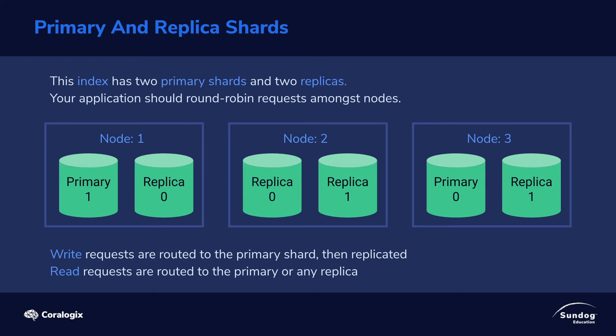Similarly, let's say node three goes away. In that example, we lost our primary node zero, but it's okay because we had a replica sitting on node one and node two, and Elasticsearch can just promote one of those replicas to be the new primary. It can get by until we restore the capacity that we lost. Using a scheme like this, we have a very fault-tolerant system. In fact, we could lose multiple nodes — we could even tolerate node one and node two going away at the same time, in which case we'd be left with a primary on node three for both of the shards.